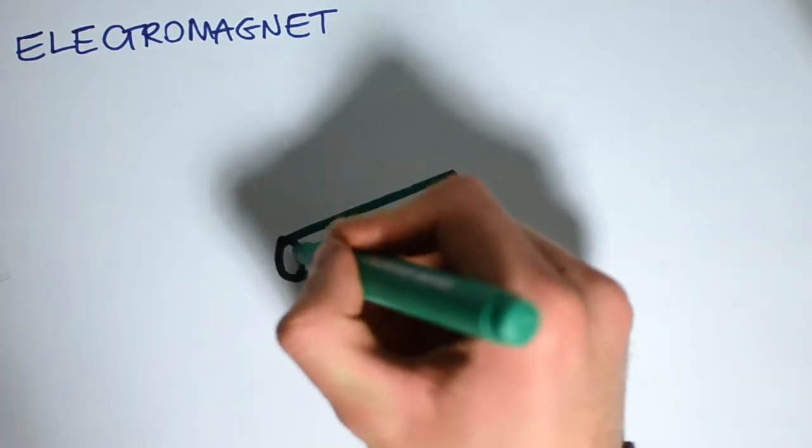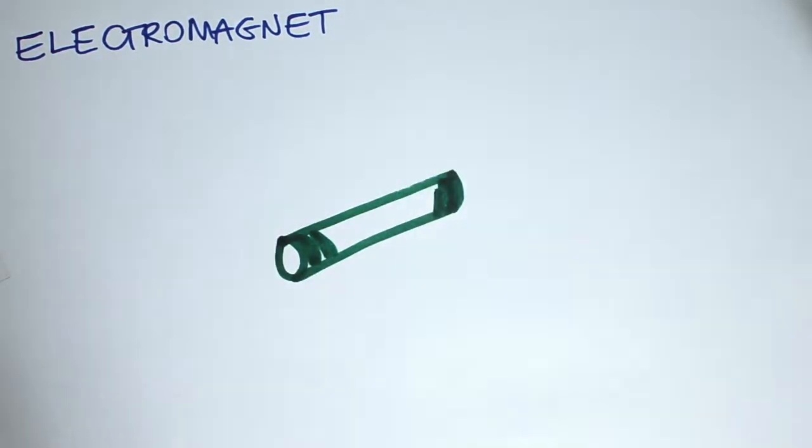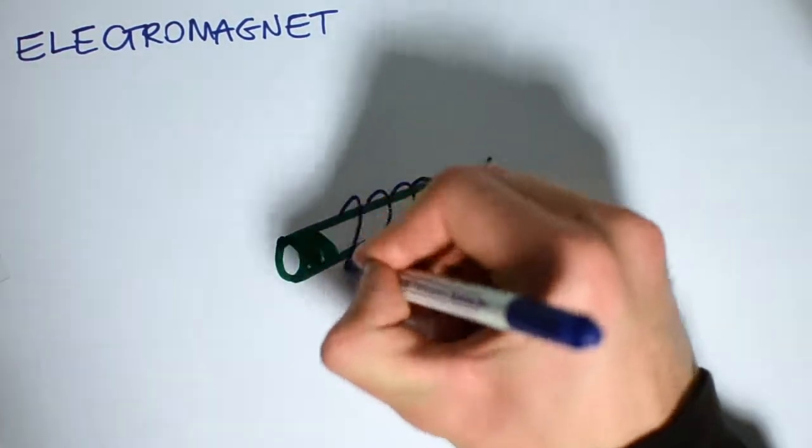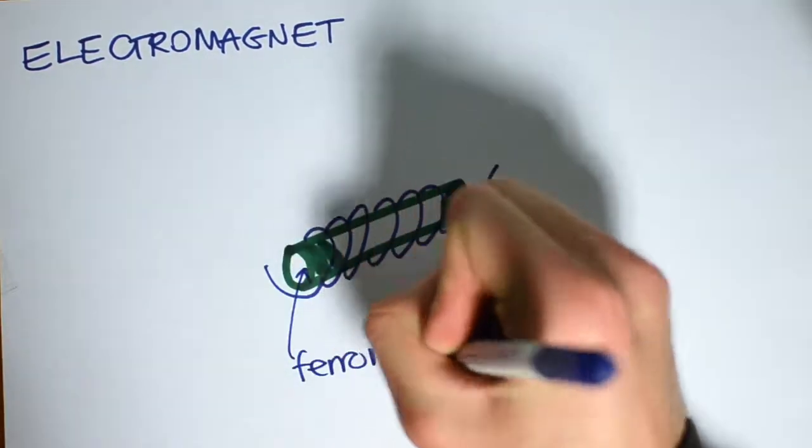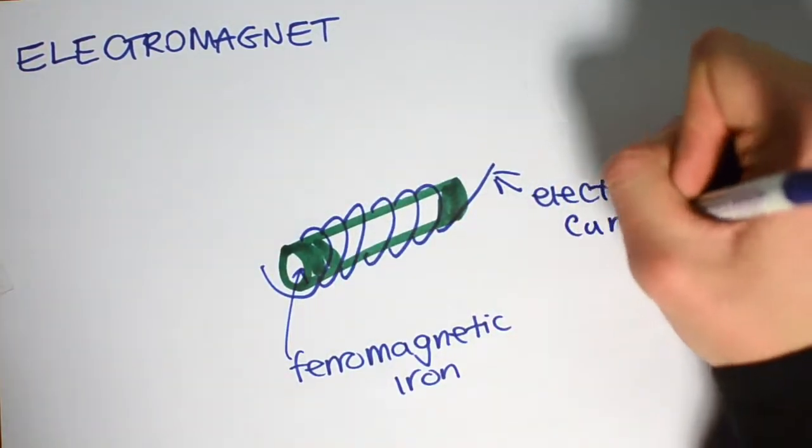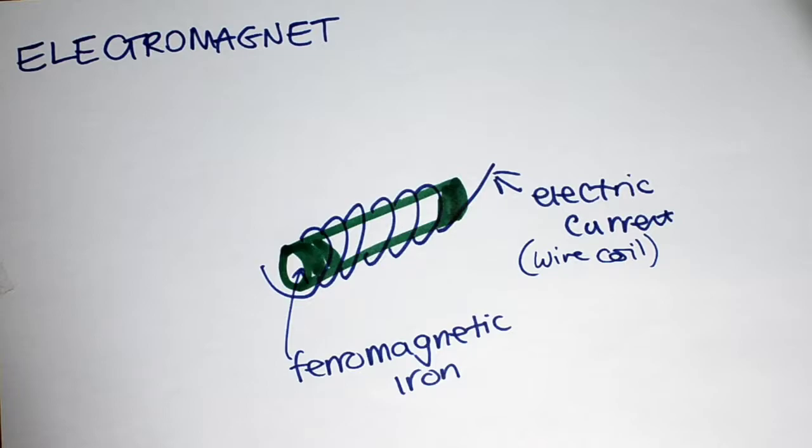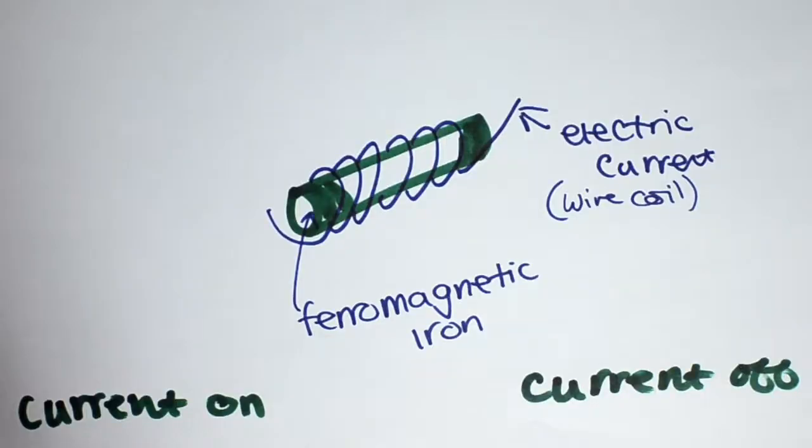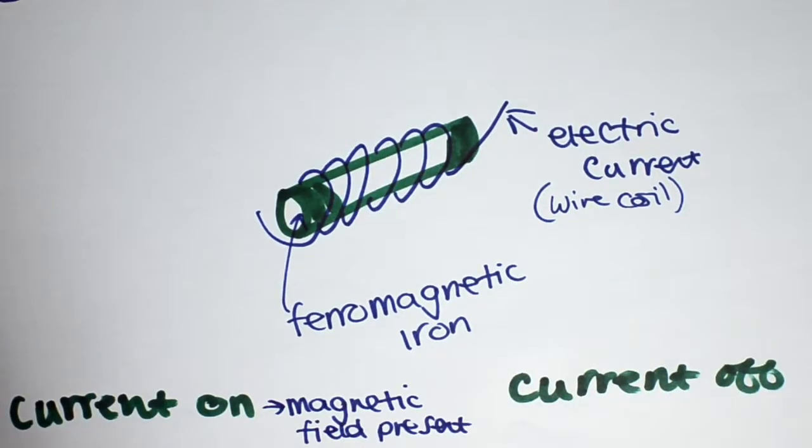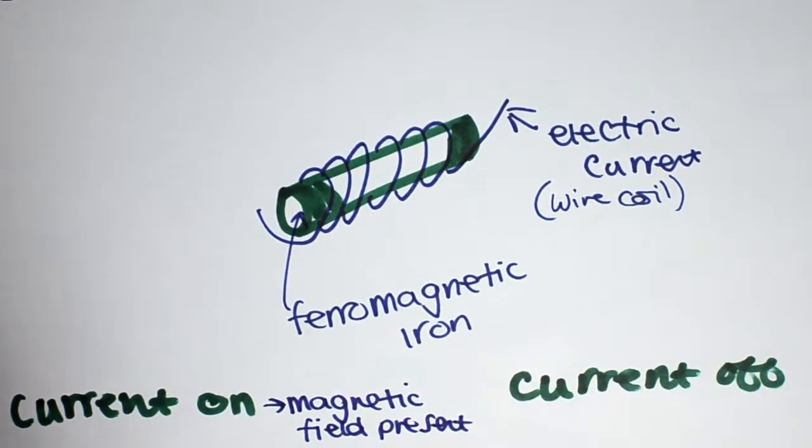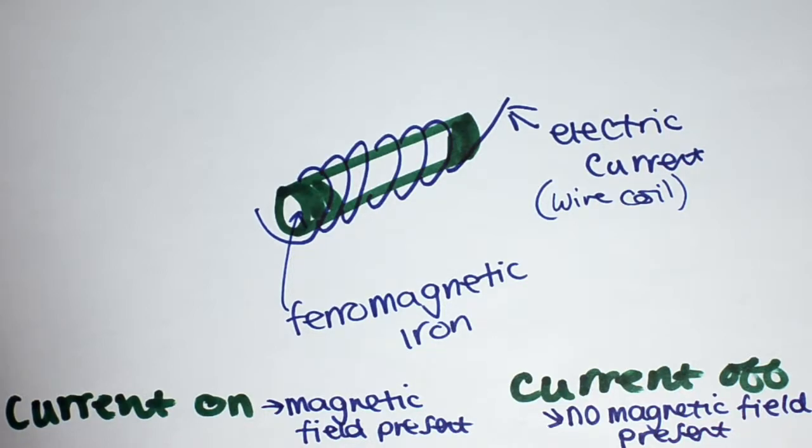An electromagnet is a type of magnet in which the magnetic field is produced by an electric current. Electromagnets usually consist of a wire wound into a coil around a ferromagnetic material. When a current is passed through the wire, it creates a magnetic field. The magnetic field is present when the current is turned on. The magnetic field is no longer present when the current is turned off.